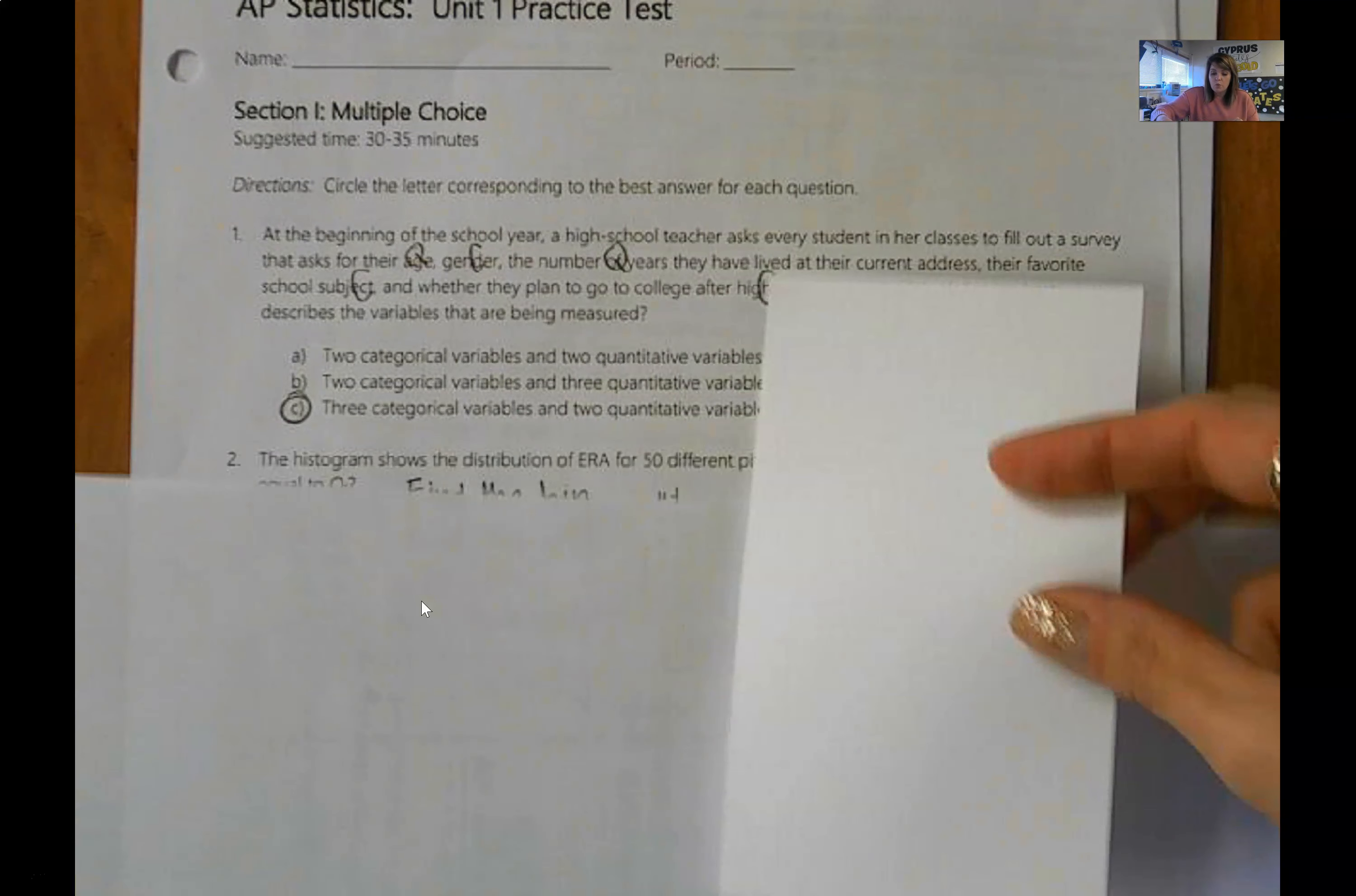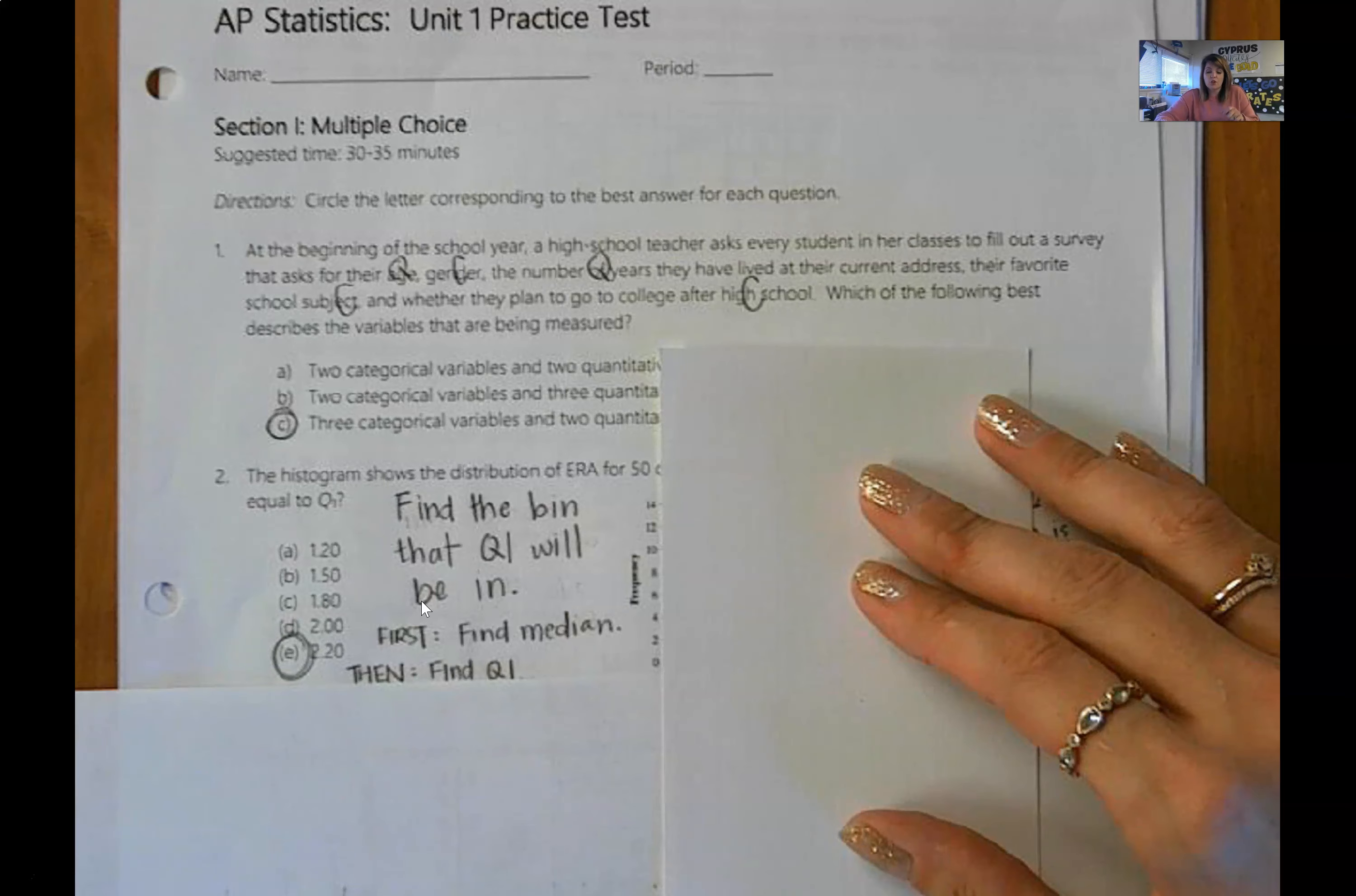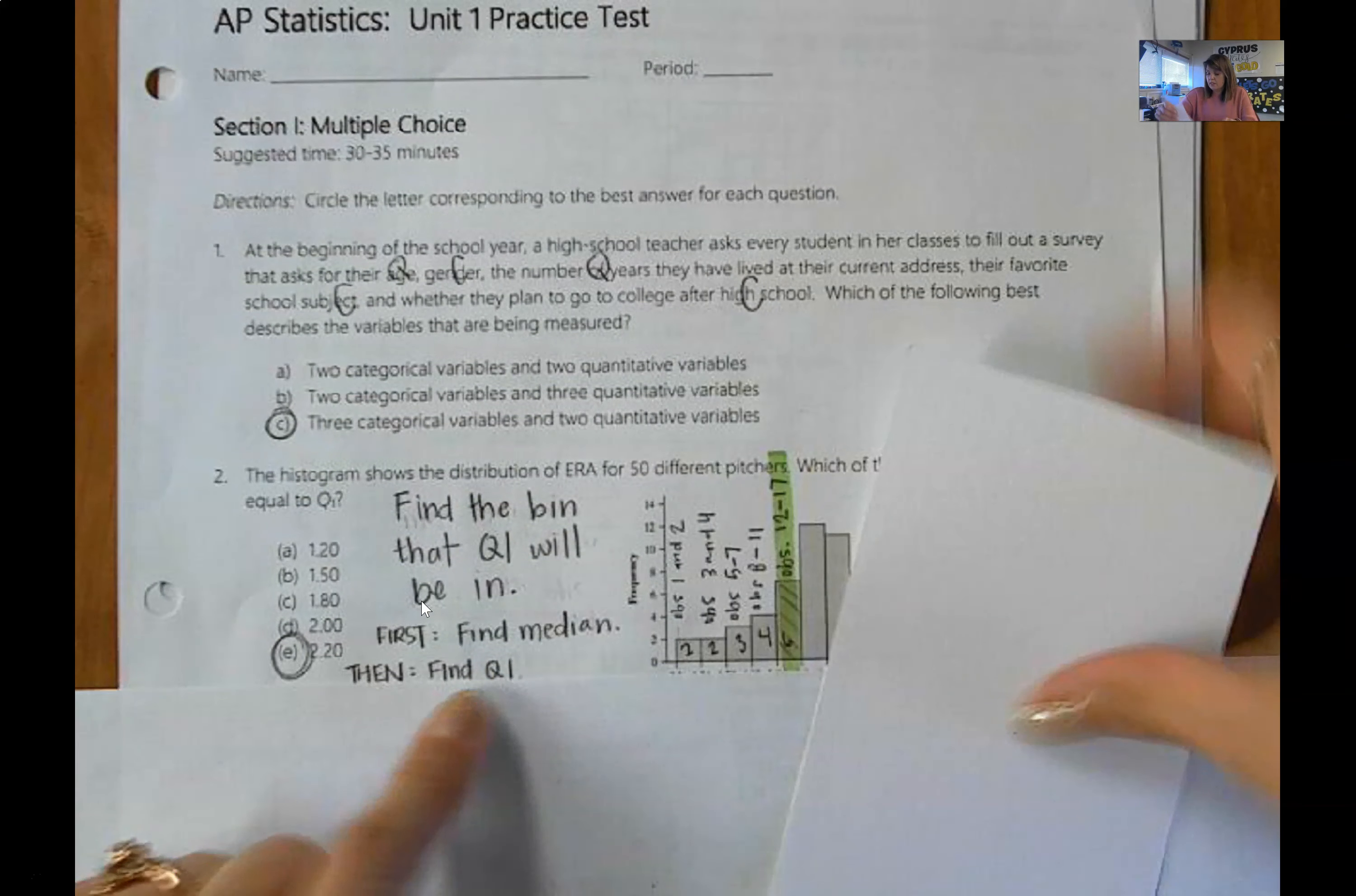Number two wants you to find what bin quartile one is in. These are the steps that you should use if you're confused on two. Find the bin that quartile one will be in, which means first you find the median, you find out what bin the median is in, then you find the quartile. So you find the bin that the quartile's in. If you haven't done this one yet, do that now. If you have done it or you still can't figure it out, then continue watching.